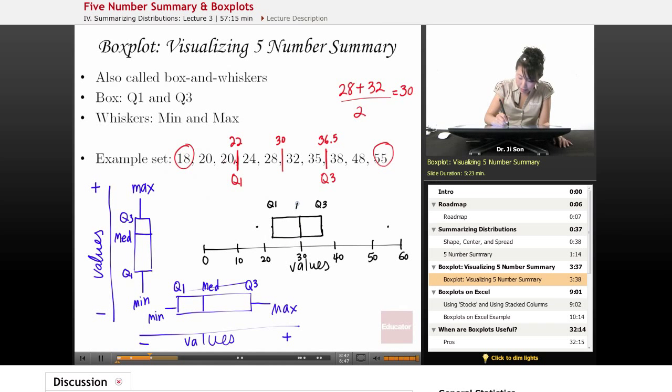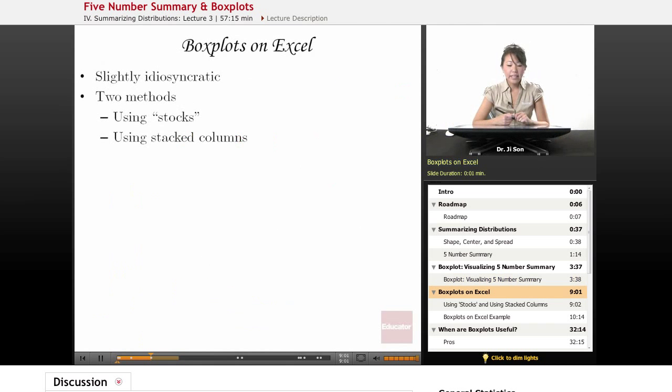And here's my median. Here's my minimum whisker, here's my maximum whisker. So this would be a box and whiskers plot or a box plot for this data set that we have right here. Now let's talk about making boxes.